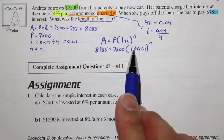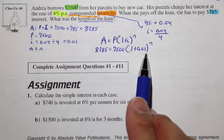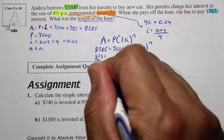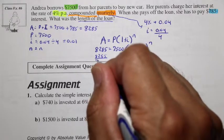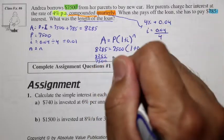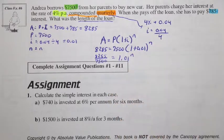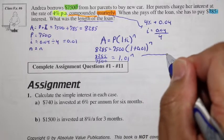And here, to isolate N, we're going to get this whole power. And so we're going to have to do 8,285 divided by 7,500 is equal to 1.01 to the exponent N. Now when we continue that, we will have to use the log of both sides.